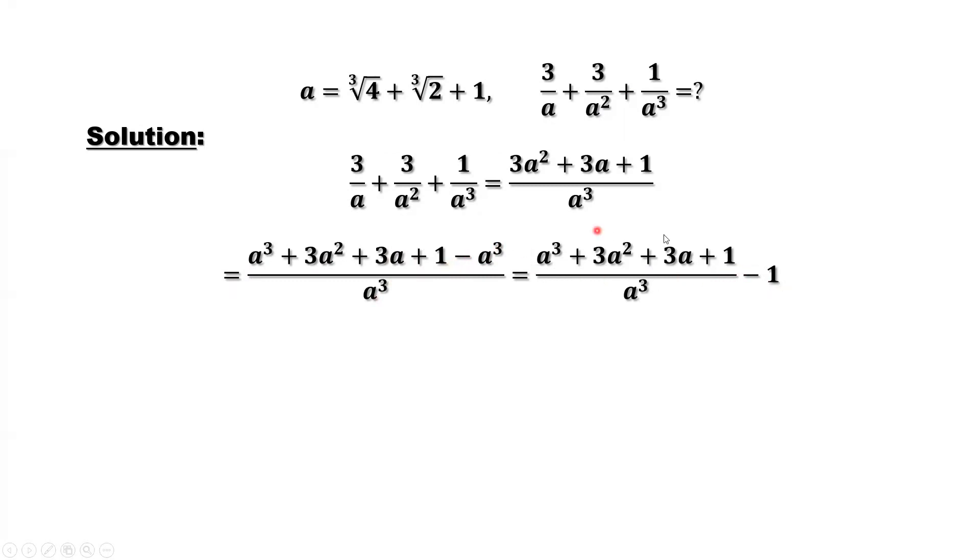What is the numerator of this part? That's a plus 1 to the power of 3, and the denominator is a to the power of 3. We can factor the same power out, that's 3. Outside, we have minus 1.